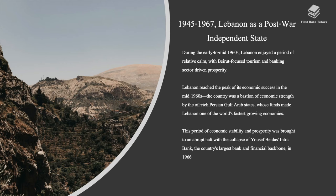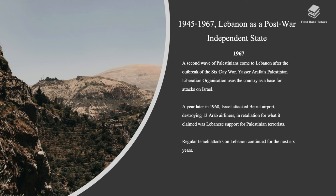Lebanon reached the peak of its economic success in the mid-1960s. The country was a bastion of economic strength backed by the oil-rich Persian Gulf Arab states, whose funds made Lebanon one of the world's fastest-growing economies. This period of economic stability was brought to an abrupt halt with the collapse of Youssef Beidas' Intra Bank, the country's largest bank, in 1966. In 1967, a second wave of Palestinians came to Lebanon after the Six-Day War. Yasser Arafat's PLO used the country as a base for attacks on Israel, and in 1968, Israel attacked Beirut Airport, destroying 13 Arab airliners in retaliation. Regular Israeli attacks on Lebanon continued for the next six years.